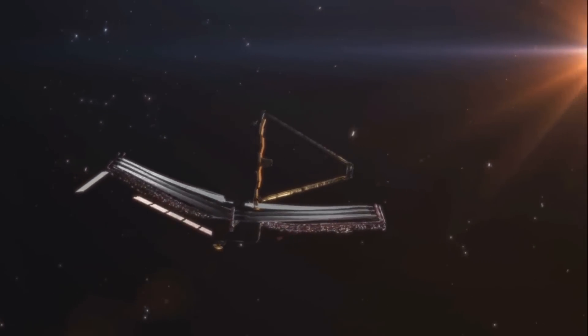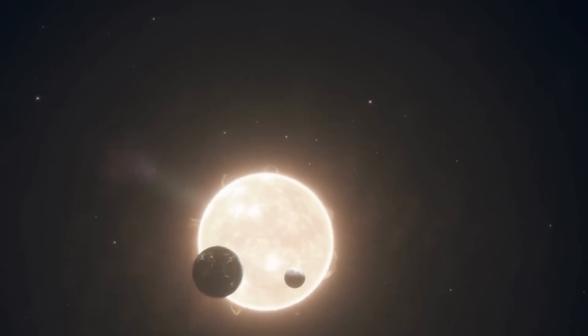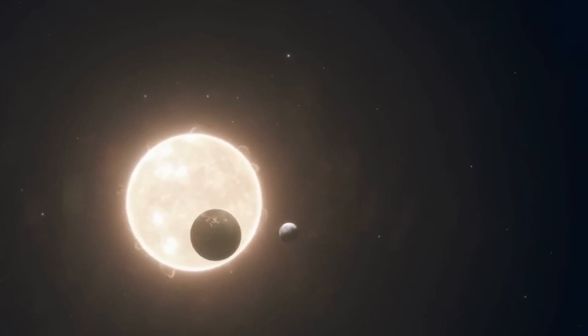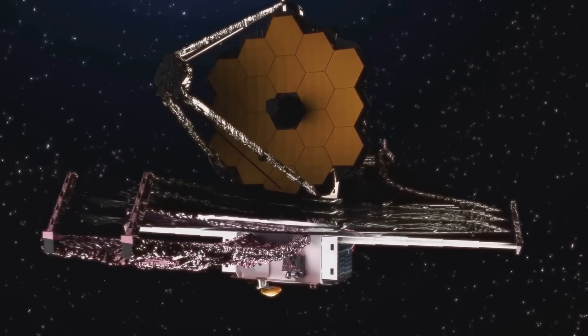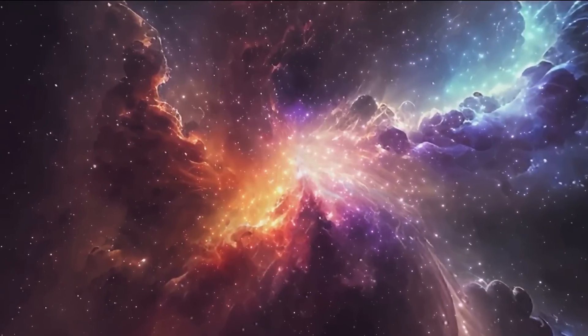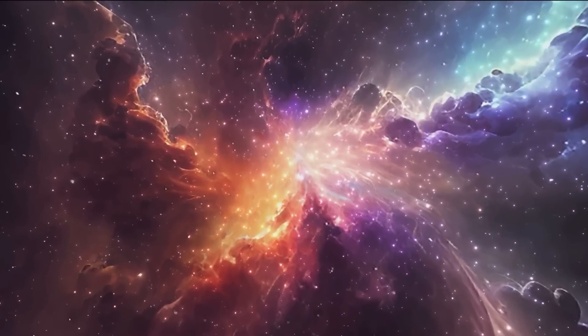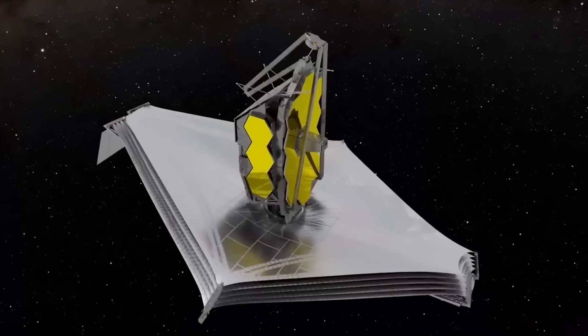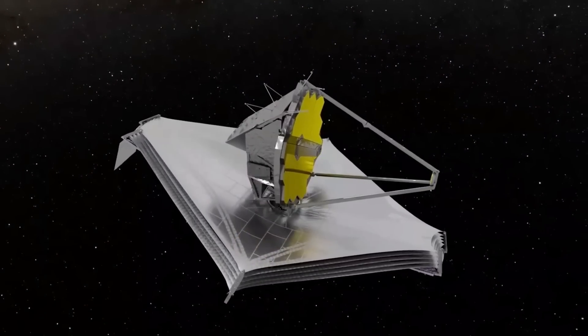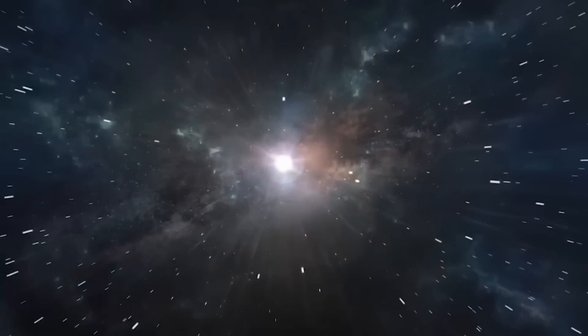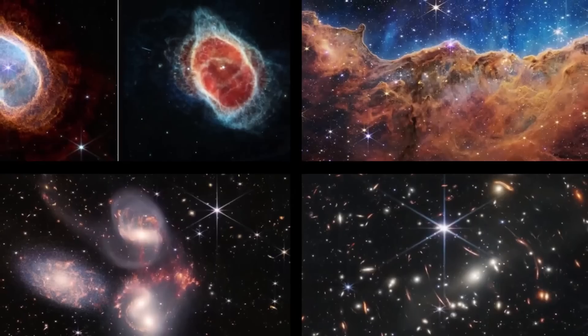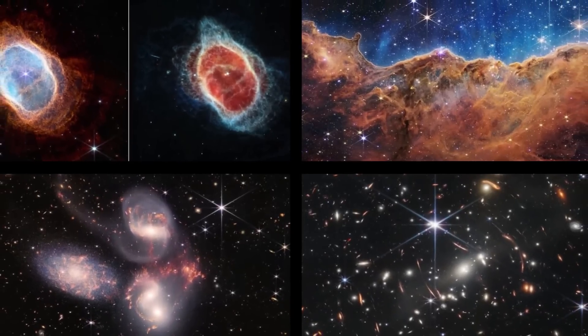Because the JWST can look so far into the cosmos, it can view back in time as well. Because light travels slowly, when the JWST observes a distant galaxy, it perceives the galaxy as it did billions of years ago, when the galaxy's initial light was released. This makes it possible for scientists to investigate the early cosmos and discover the mechanisms that gave rise to the modern universe.